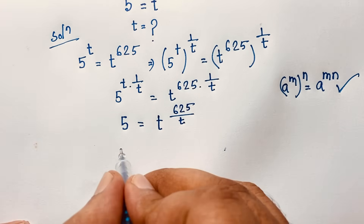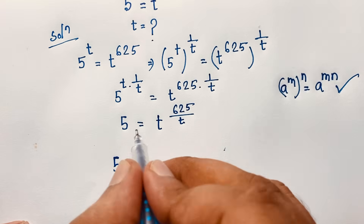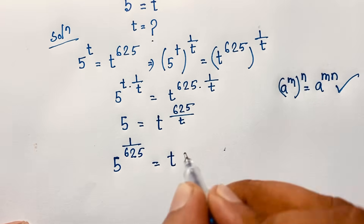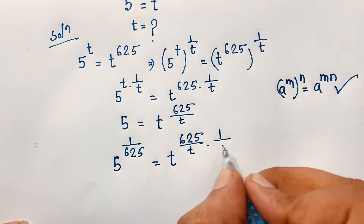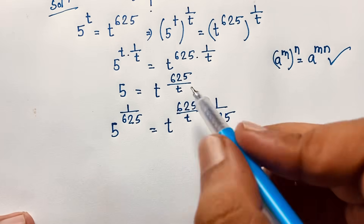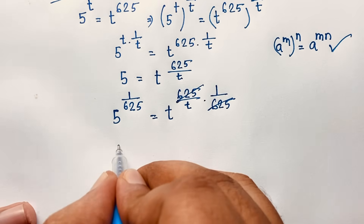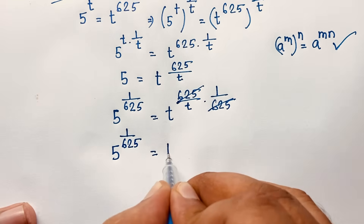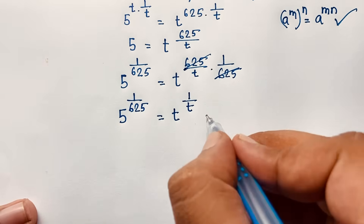Now I apply the exponent 1 over 625 to both sides. On the right side, t to the power 625 over t, raised to 1 over 625 — the 625's cancel out. We find: 5 to the power 1 over 625 is equal to t to the power 1 over t.